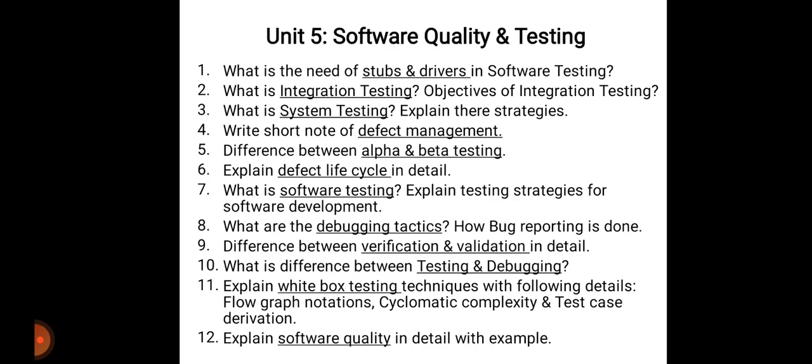Unit 5 is software quality and testing. Software testing is one of the most important points — prepare what is testing, the different types of testing, and explanation of each type. The first question is: what is the need of stubs and drivers in software testing? The second: what is integration testing and its objectives? In the exam they may ask integration testing, system testing, or unit testing, alpha and beta testing — any two types.